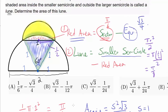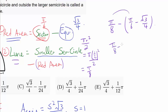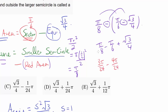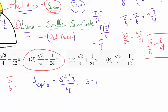We now have all the necessary ingredients. The area of the lune is π/8 (area of the smaller semicircle) minus the red area (π/6 − √3/4). That gives us π/8 − π/6 + √3/4. Computing π/8 − π/6: that's 3π/24 − 4π/24 = −π/24. So the lune area is √3/4 − π/24, which corresponds to answer choice C.